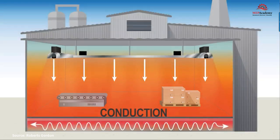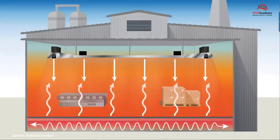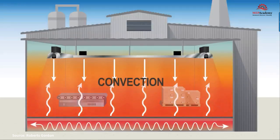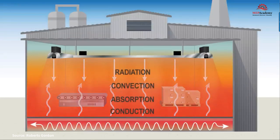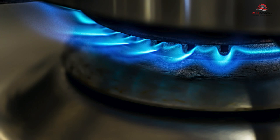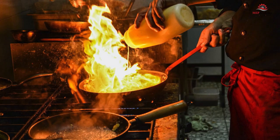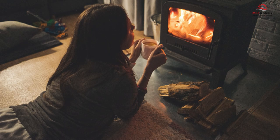The walls, floors, and ceiling can then radiate this heat back out to objects and the people surrounding the space. Using the stove as our example again, we would feel the heat radiating out from the hot burner without actually having to touch it.